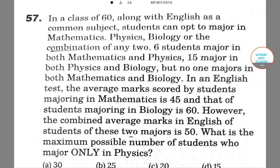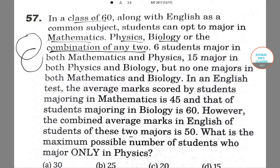Hello students, welcome to Saurav Sir's classes. The question is: in a class of 60, along with English as a common subject, students can opt to major in Mathematics, Physics, Biology, or the combination of any two. So we have Mathematics, Physics, and Biology.